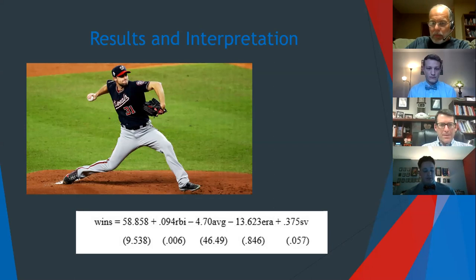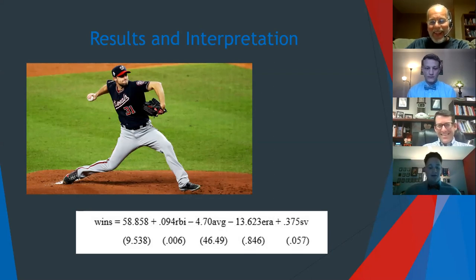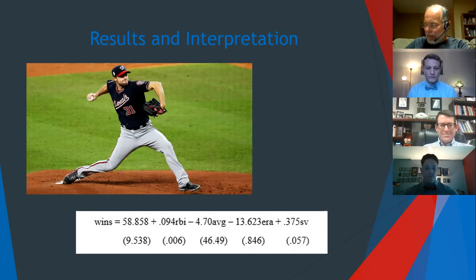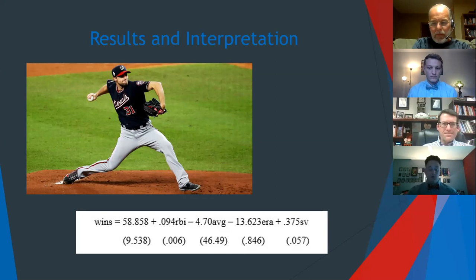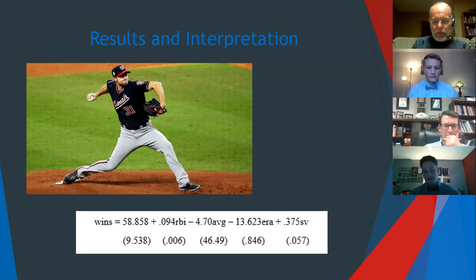Interpreting the regression: the intercept of 58.858 means a team with zero values for all variables would win 58 games — which makes no practical sense, which is why all variables are needed together. For RBIs, the coefficient is 0.094, meaning one extra RBI increases wins by 0.094. For batting average, each 0.1 unit increase actually decreases total wins by 0.047, meaning teams that hit better would win less — a notable and counterintuitive finding.